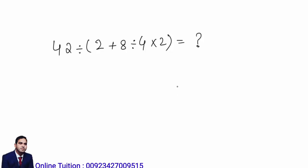This is a very confusing question that many people get wrong. It looks simple but when you solve this kind of basic math question you may get the wrong answer. Let's watch the video. The question is: 42 divided by, in bracket, 2 plus 8 divided by 4 multiplied by 2, equals question mark. What is the answer?